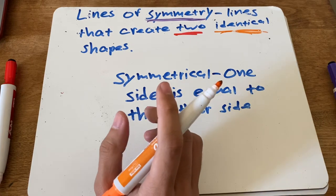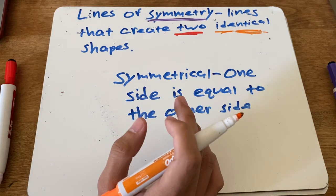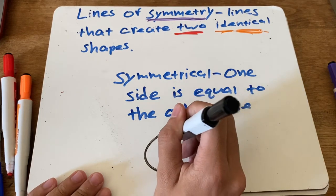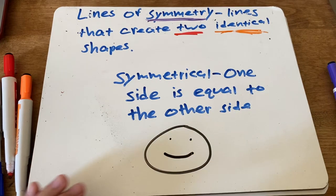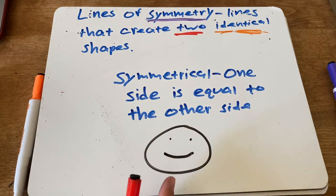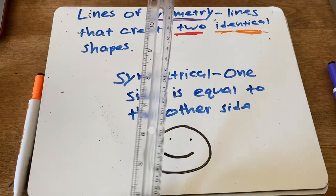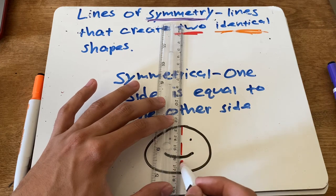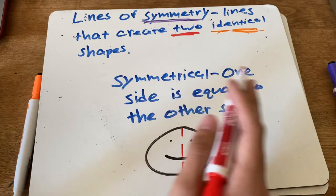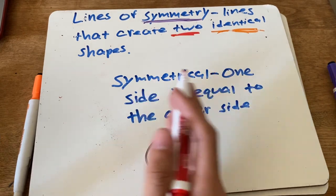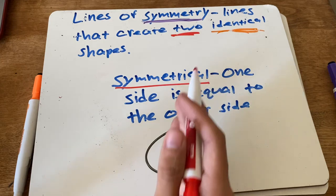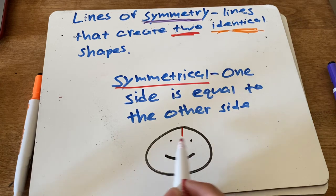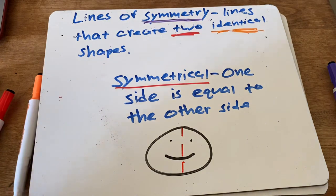Find a mirror in your house and look at your face. I'll draw it instead — there is a line of symmetry right here in the face, because if you draw a line straight down the middle, this side is the same as this side. They are equal reflections — they are symmetrical. On this side you have an eye and mouth, and on the other side you also have an eye and mouth, the same size. That's what we're doing today: finding lines of symmetry.